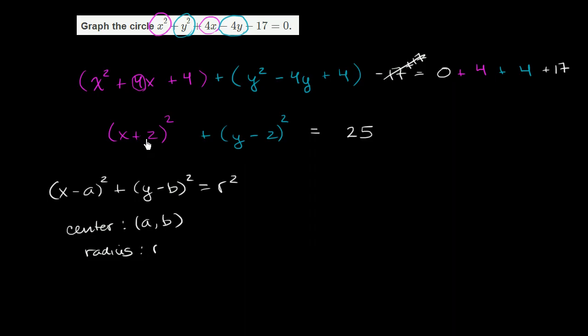So if we look over here, what is our a? We have to be careful here. Our a isn't 2, our a is negative 2. x minus negative 2 is x plus 2. So the x-coordinate of our center is going to be negative 2, and the y-coordinate of our center is going to be 2. We care about the x value that makes this 0 and the y value that makes this 0. So the center is negative 2 comma 2. And this is the radius squared, so the radius is equal to 5.